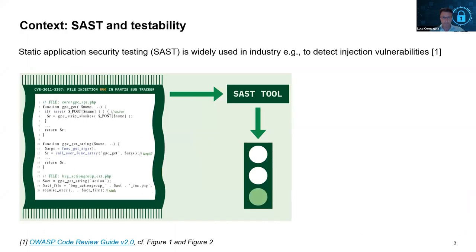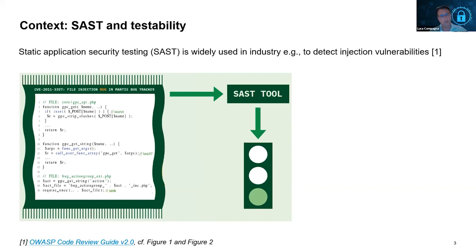The context is SAST — static application security testing. There are likely some web developers in the audience who may have used these tools. Essentially, if you have an application — a web application or any software — you can use a static analyzer to analyze the source code, hoping to detect vulnerabilities. The tool creates an internal structure, like an abstract syntax tree with control flow and data flow relationships, then navigates that structure to discover vulnerabilities like cross-site scripting or SQL injections.